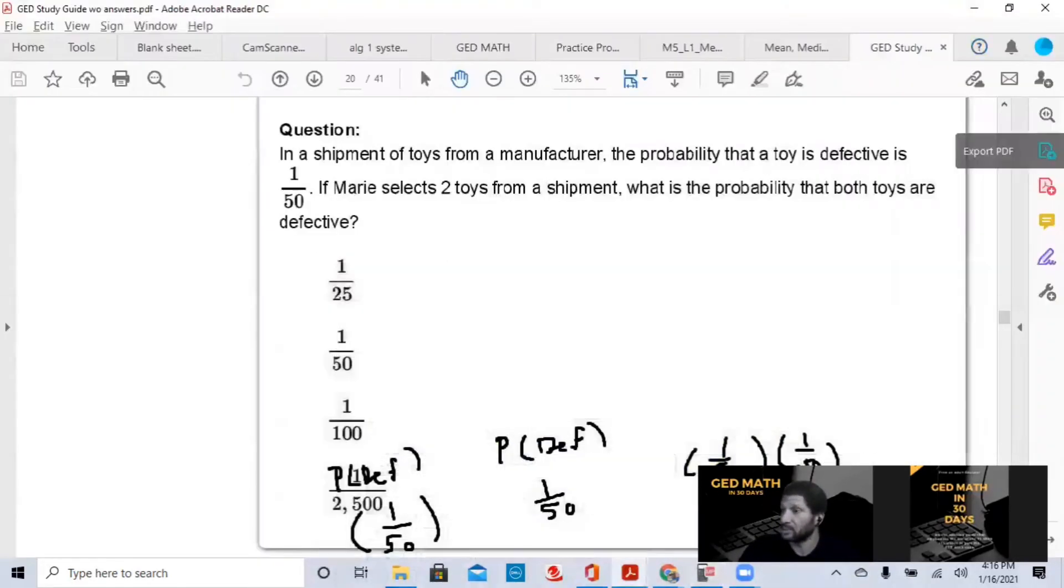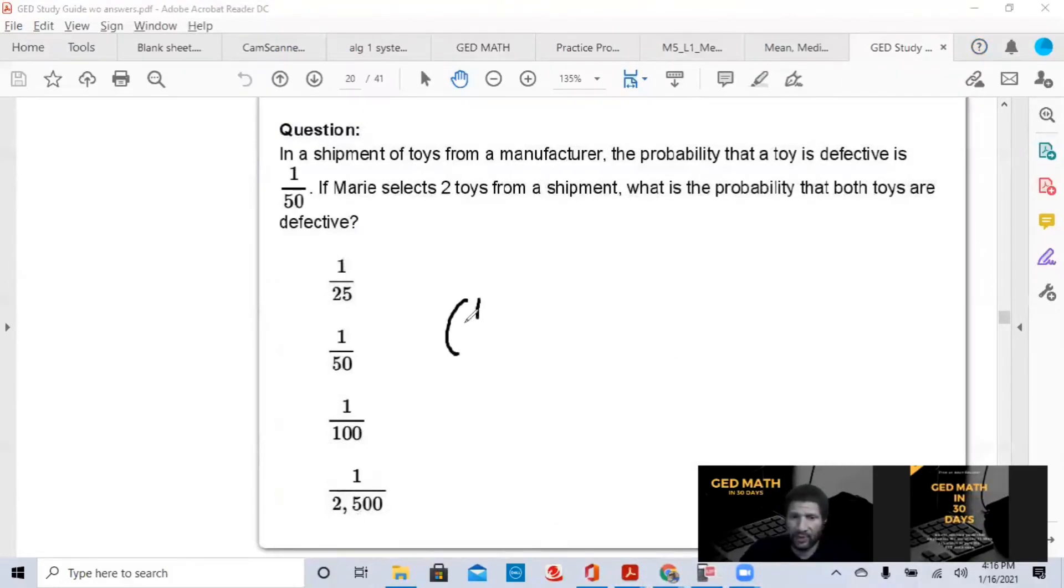Let me clear my screen. We have 1 over 50 times 1 over 50. We multiply across. 1 times 1 is 1. 50 times 50 is 2,500. And we have 1 over 2,500. That simple. If Mary selects two toys from a shipment, the probability that both toys are defective would be 1 out of 2,500, or 1 over 2,500 if you want to say it's a fraction or ratio. And the percentage was 0.04%.